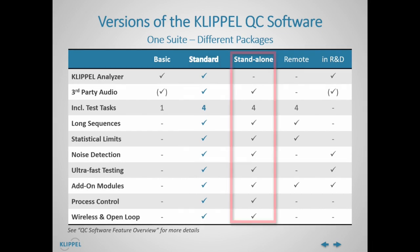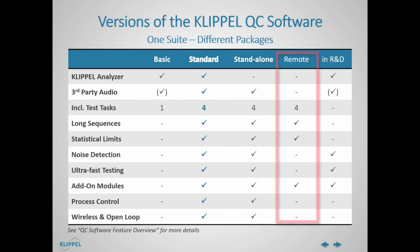The QC Standalone version provides a very similar feature set, but unlike QC Standard it is dedicated for testing without Klipple Analyzer hardware. This version only requires a licensed dongle and can be applied for open loop or closed loop testing with any third-party sound card or even based on WAV files only. The QC Remote Configuration license is dedicated for test and limit setups for many PCs without test hardware connected.